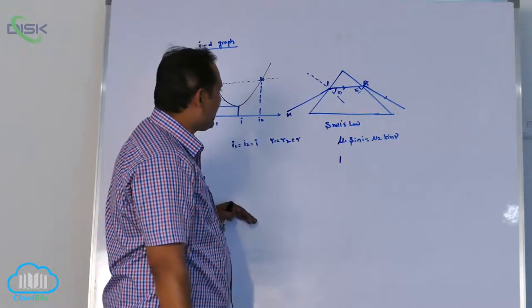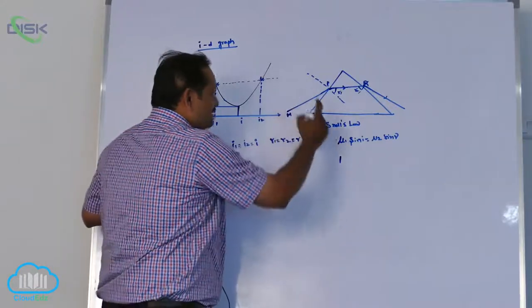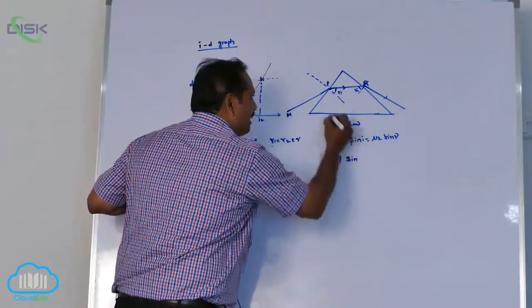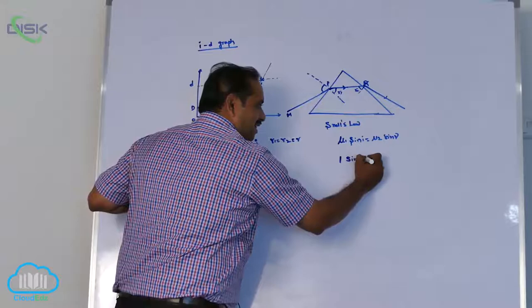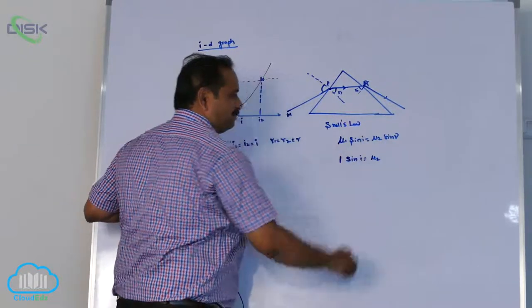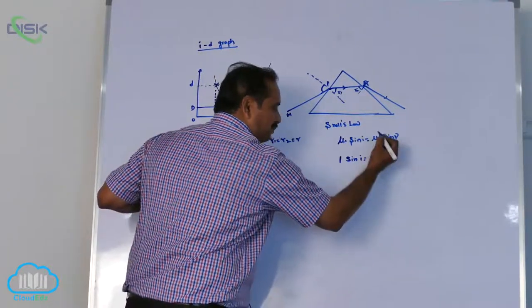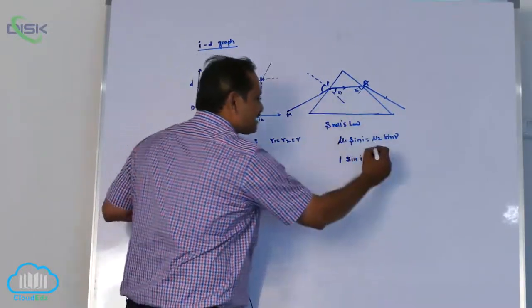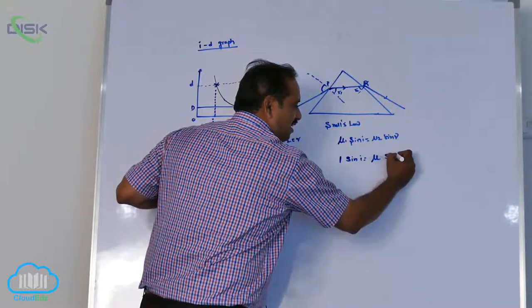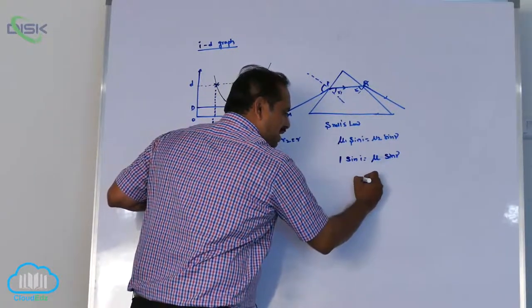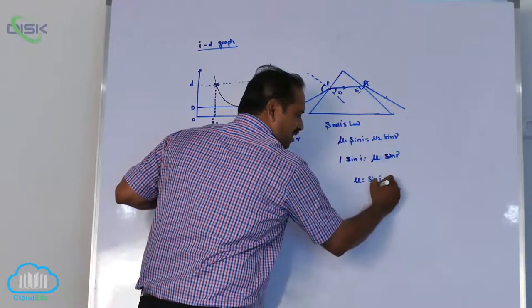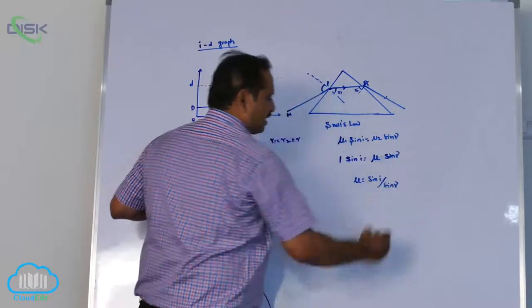First surface: medium refractive index is 1. Sin i1, that is nothing but i, equal to mu2 into, mu2 is what? Let it be refractive index of the surface, mu and sin r. Now that is mu equal to sin i by sin r, the condition.